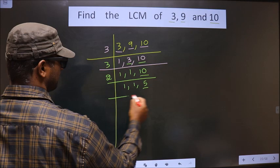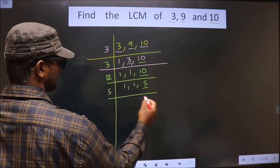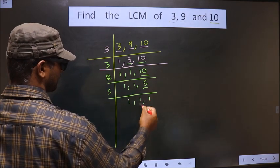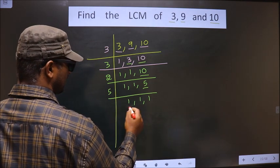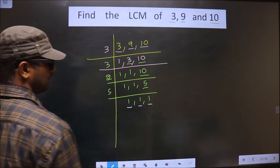Now 5 is a prime number. So we take 5 goes into 5.